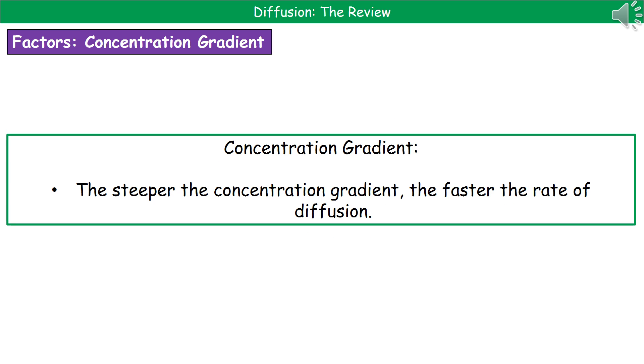Our second factor is the concentration gradient. Now, the pattern we see with this one is that if we've got a steeper concentration gradient, so that means that we've got a greater difference between our two areas, so one's a really high concentration and the other a very low concentration, then what we see is we have a faster rate of diffusion. So the steeper the concentration gradient, the faster the rate of diffusion.